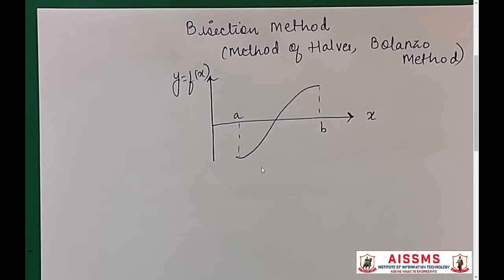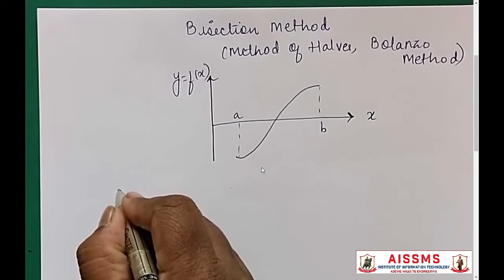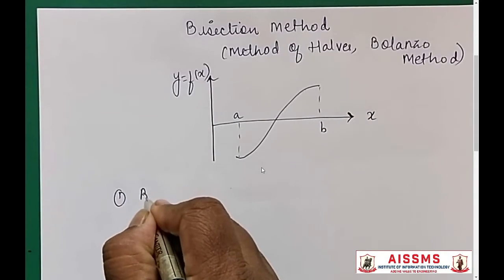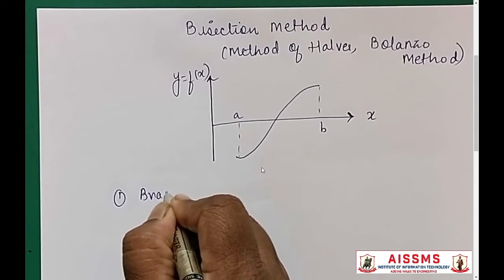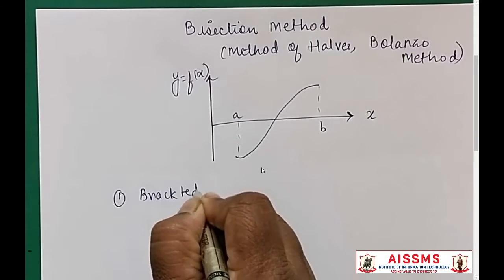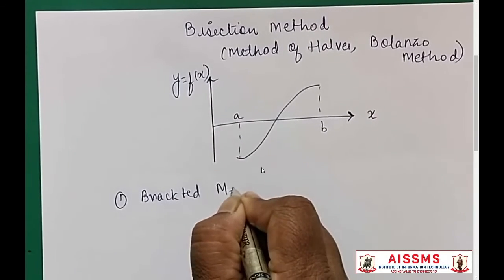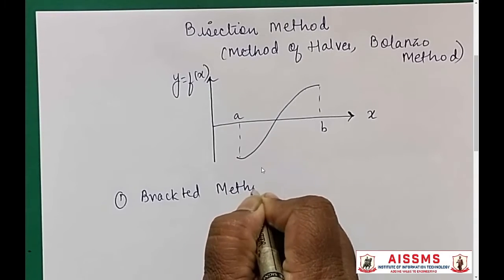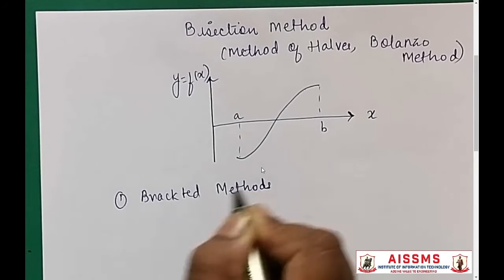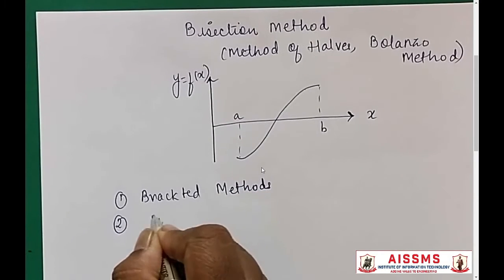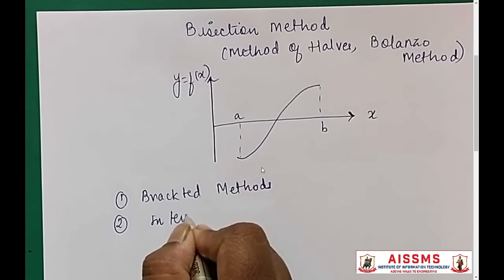Let's start with the theory of the bisection method. This method is also called the method of halves or the Balenzo method. It comes under the category of bracketed methods and is based on the intermediate value theorem.